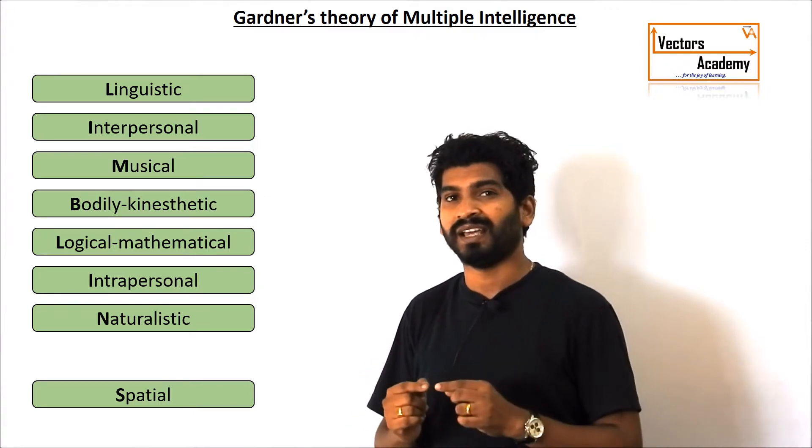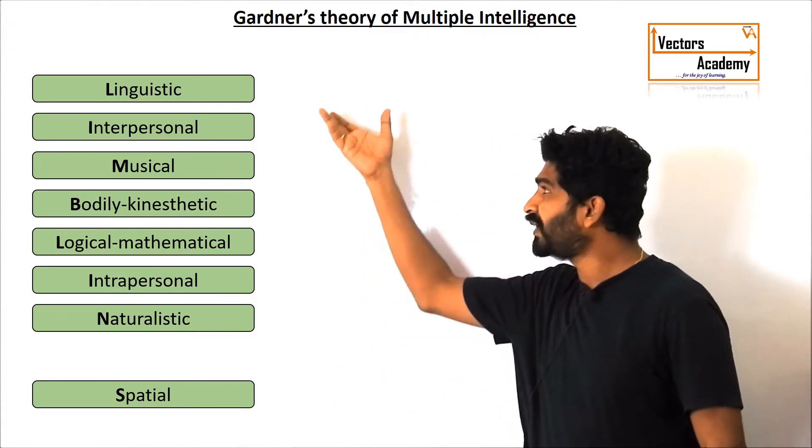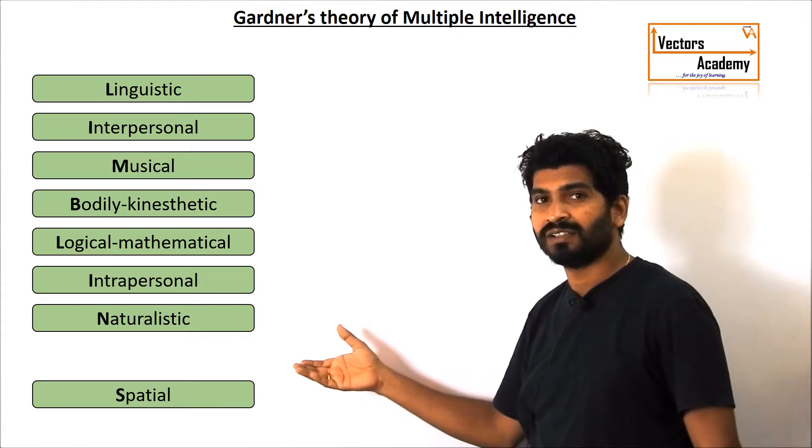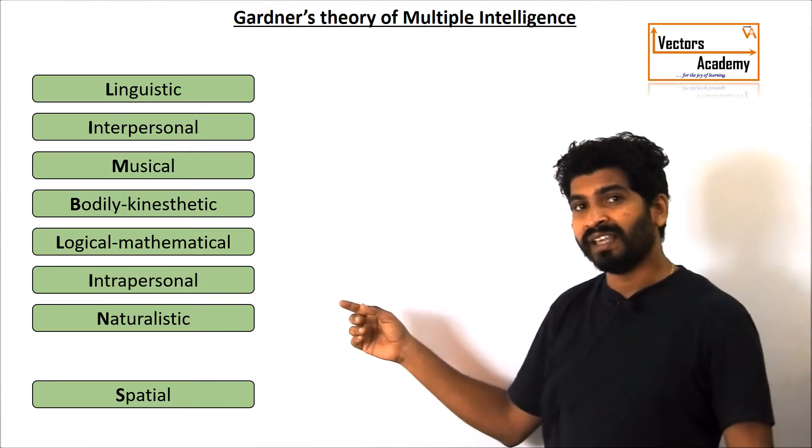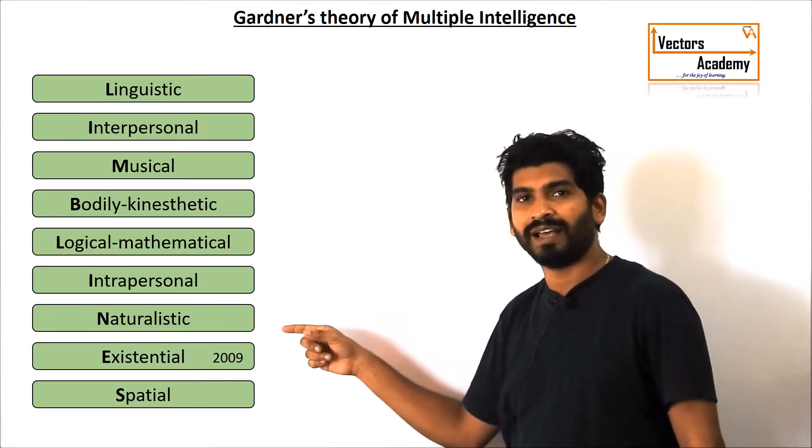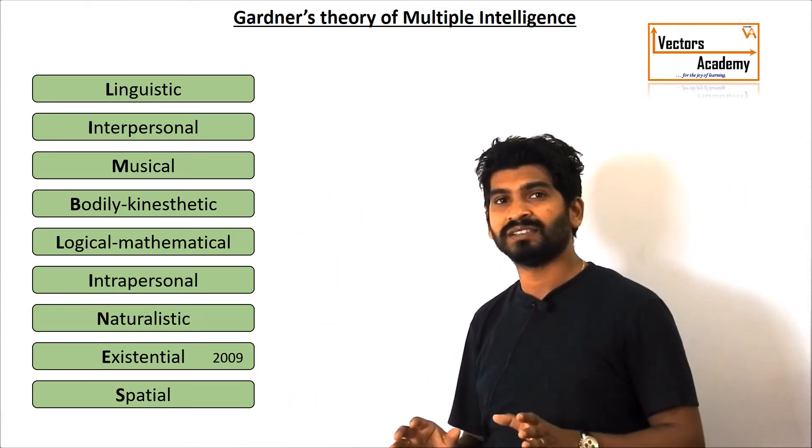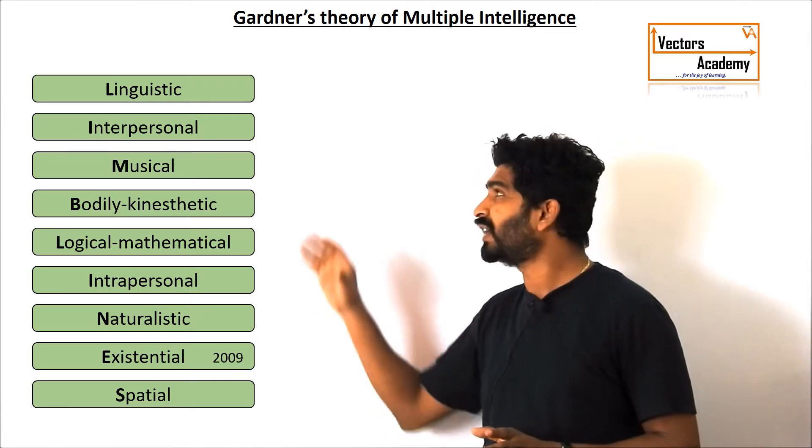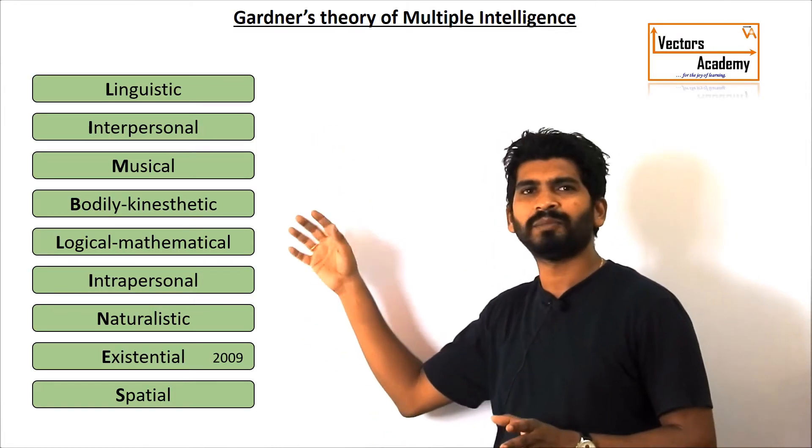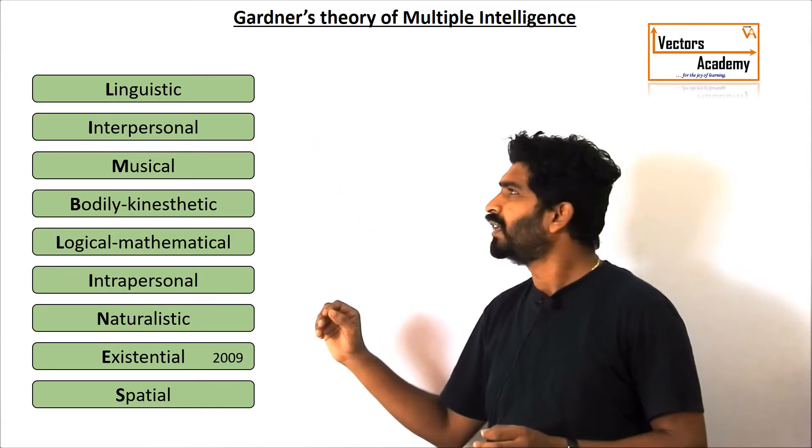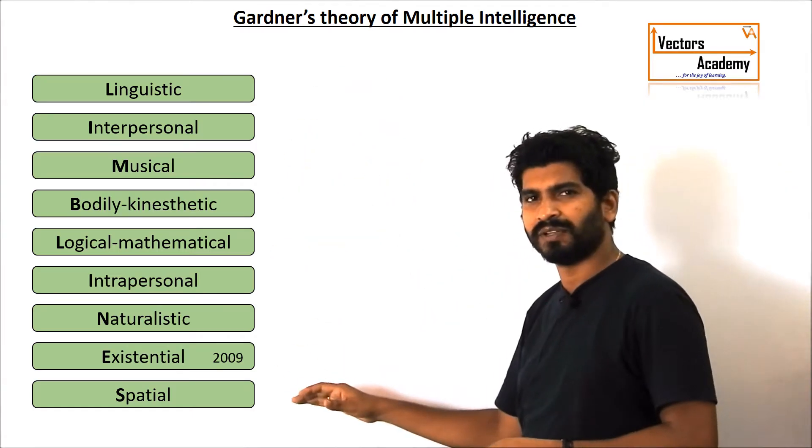Intelligence are of different types. So he defined 8 different aspects of intelligences. And in 2009 he added another aspect of intelligence. So in all there are 9 different types of intelligences the person has which are interrelated to each other and some are independent of each other. Now we will have a look at these intelligences one by one.